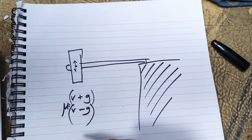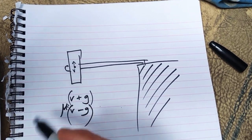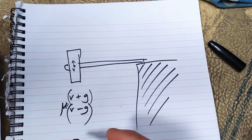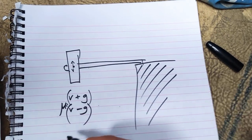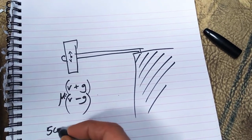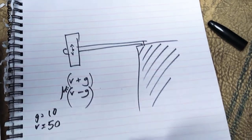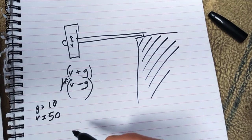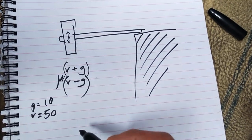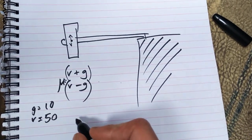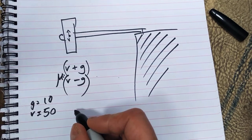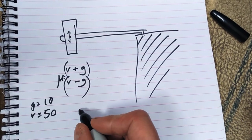So if we put in some numbers, let's call the velocity 50 and we'll call gravity 10. Say it's going very fast, it's five times the force of the gravity. Then we can have a go at this. Gravity plus velocity is 60 and velocity minus gravity is 40.